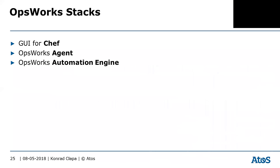OpsWorks is like a GUI for Chef. There are two components: the OpsWorks agent, which is installed on your virtual instances and does the actual work on your operating system installing services and applications; and the OpsWorks automation engine, which talks to AWS and provisions the AWS resources.